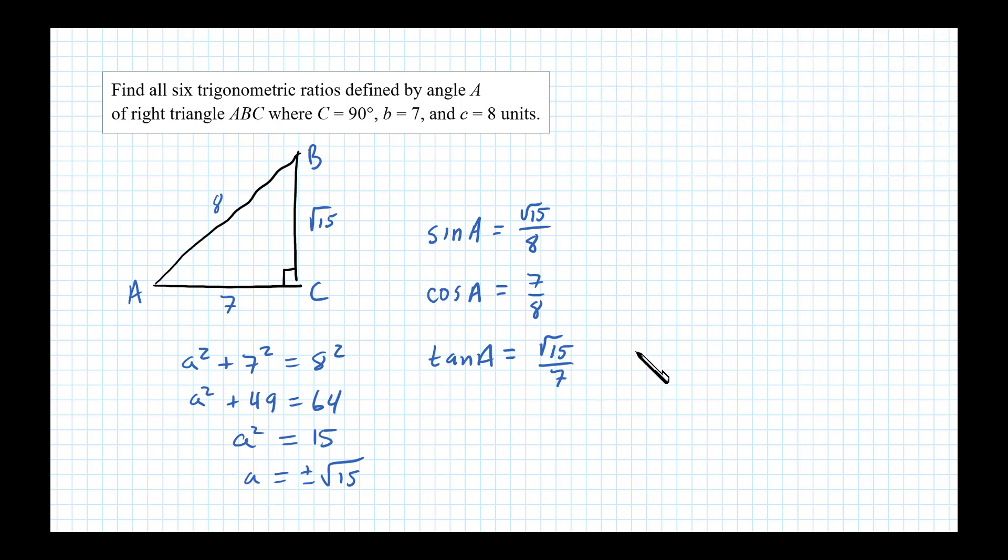Now the other three are just the reciprocals. So cotangent of A is equal to 7 over square root of 15. The reciprocal of cosine is secant, so secant of A is 8 over 7. And cosecant, the reciprocal of sine, is going to be 8 over square root of 15.